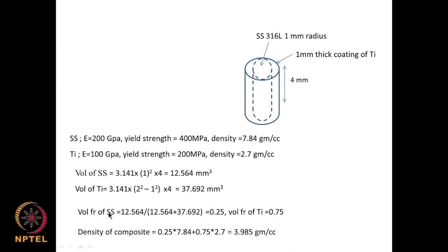Volume fraction of stainless steel = 12.56 / (12.56 + 37.7) = 0.25. Volume fraction of titanium = 0.75. Density of the composite = 0.25 × 1.84 + 0.75 × 2.7 = 0.46 + 2.025 ≈ 2.484 g/cc (stated as approximately 3.984 in the lecture — the composite density is dominated by titanium since its volume fraction is very high).